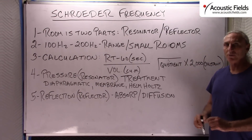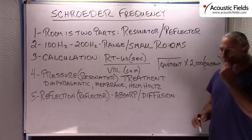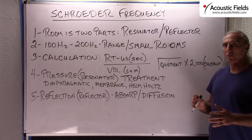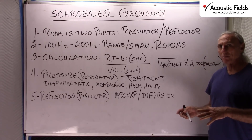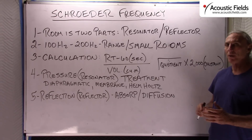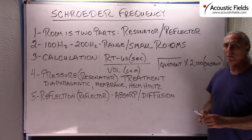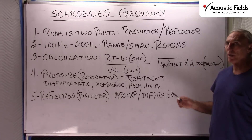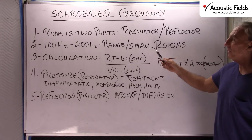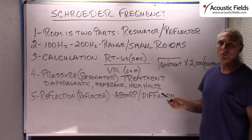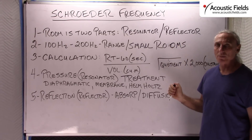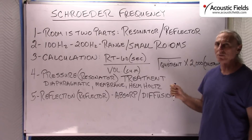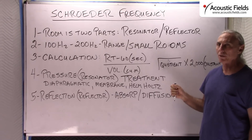The Schroeder Frequency is a term to illustrate the difference between how waves impact the room versus rays. We've done quite a few videos on waves and rays, and we have a really good ocean video on waves that you should look at. Basically, Schroeder was a German engineer — the same gentleman that brought us quadratic diffusion — so he was a very good acoustician.